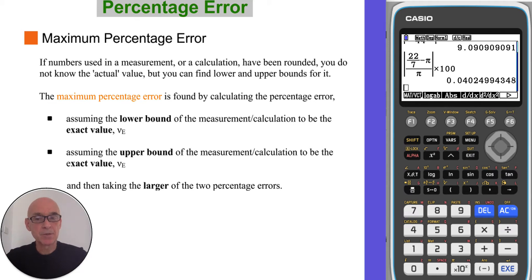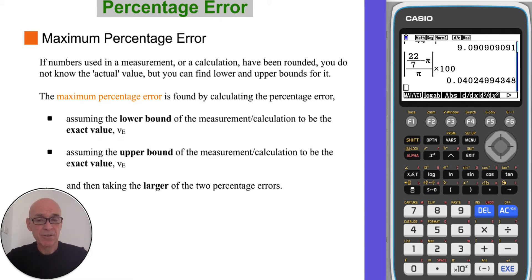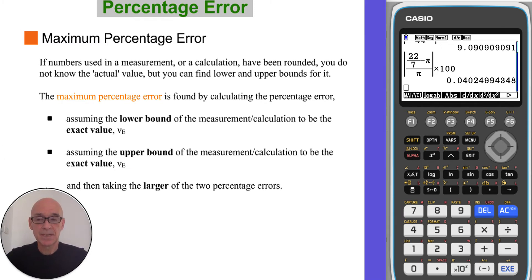If numbers used in a measurement or calculation have been rounded, you do not know the actual value, but you can find the lower and upper bands for it. The maximum percentage error is found by calculating the percentage error first assuming the lower band of the measurement to be the exact value VE, then calculating the percentage error a second time assuming the upper band to be the exact value, and then taking the larger of these two percentage errors.